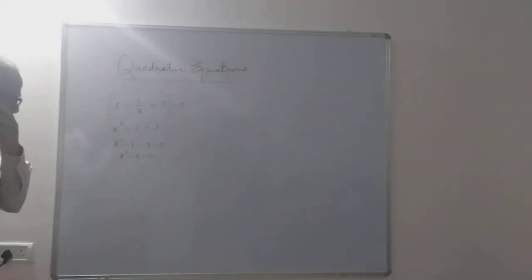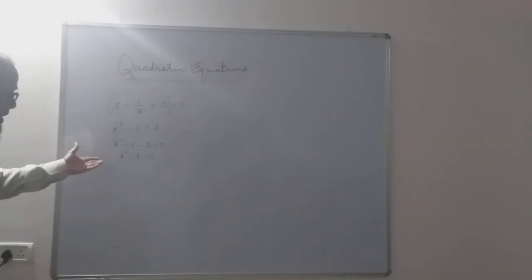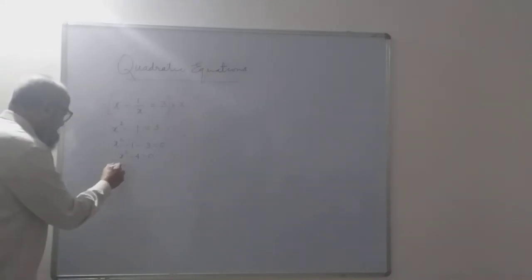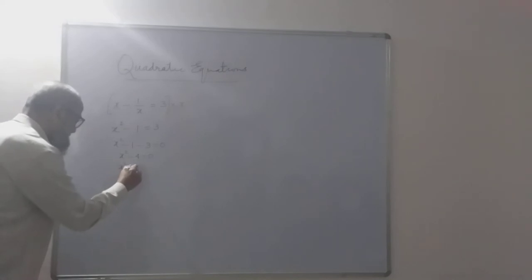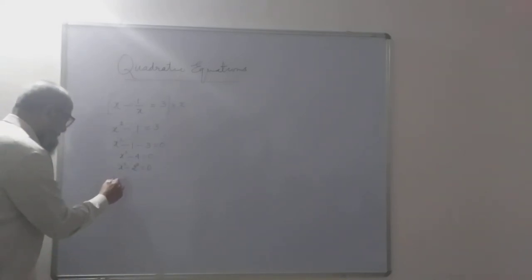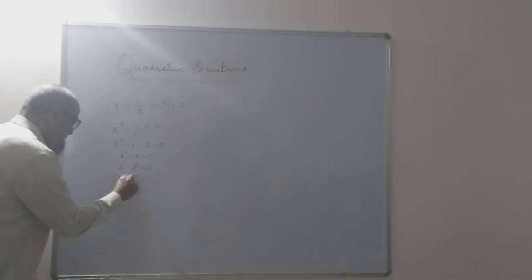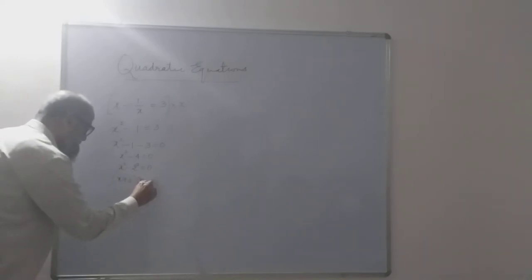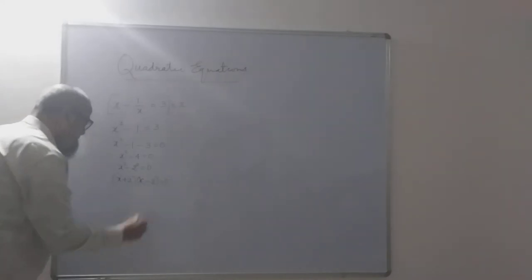This can be done either by factorization or by the formula method. Here, the factors of x squared minus 4: since 4 can be written as 2 squared, it is of the form a squared minus b squared. The factors will be (a+b)(a-b), so (x+2)(x-2) is equal to 0.